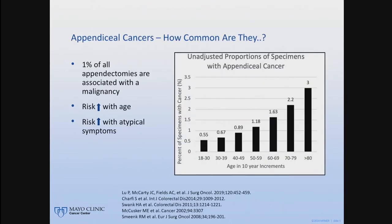Appendiceal cancers are actually a rare cause of acute appendicitis. However, most general surgeons in this room will probably do hundreds of appendectomies throughout their career, so it'll be something you've likely dealt with or will deal with in the future. That risk increases with age — about half a percent in 20-year-olds, going up to about 3% of acute appendicitis in octogenarians.